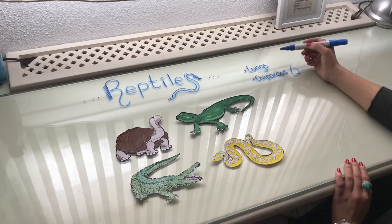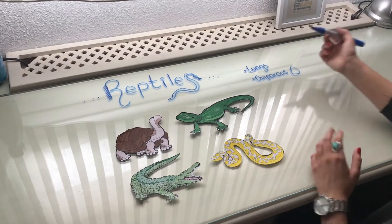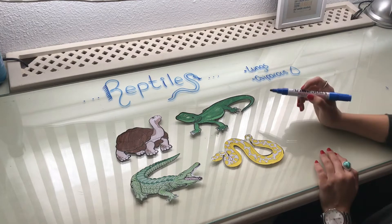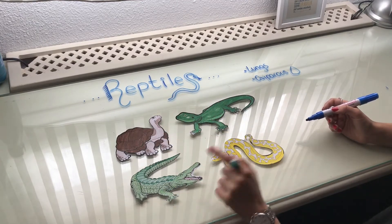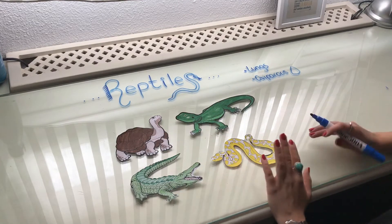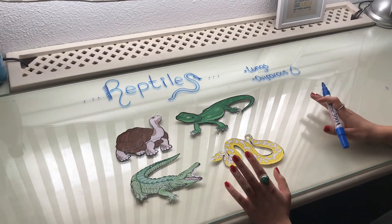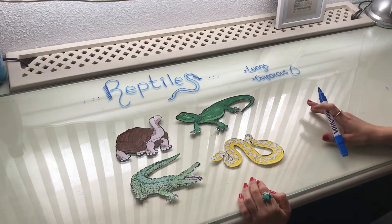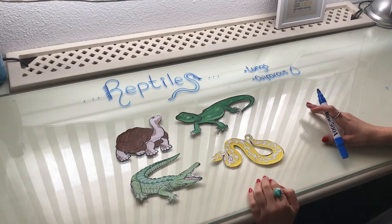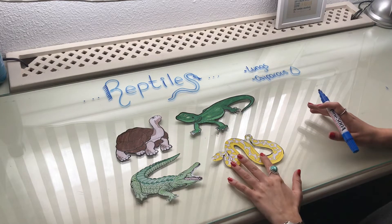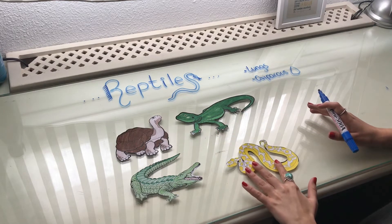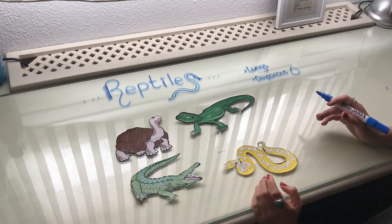Even though these two characteristics are very general for reptiles, we can see from our examples that we have completely different animals — all of them with different characteristics. For example, snakes will be the most different ones.